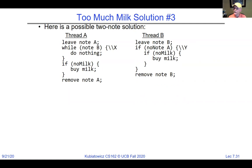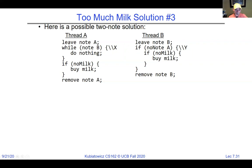Our solution protects a single critical section — 'if no milk, buy milk' — but we had to do a lot of work. We want something like acquire/release that is fully symmetrical no matter how many threads there are, and allows multiple locks: a milk lock, OJ lock, yogurt lock, etc. Then the milk problem becomes trivial: acquire milk lock, if no milk buy milk, release milk lock.